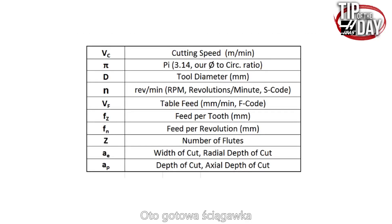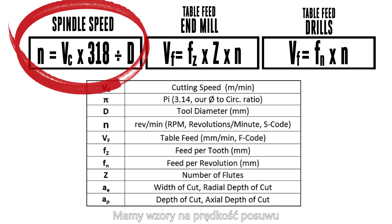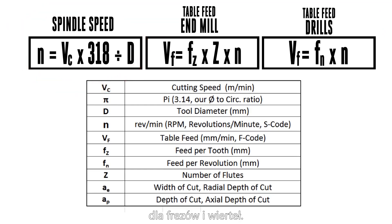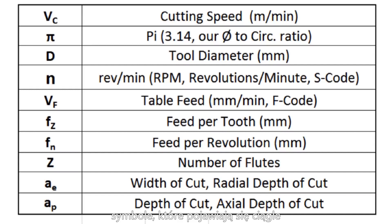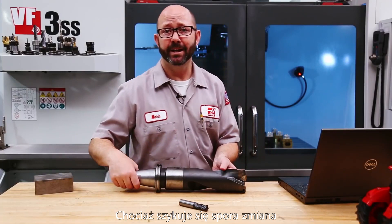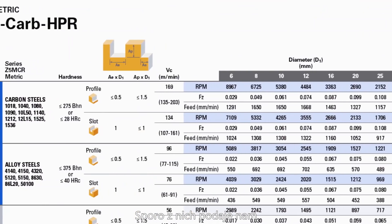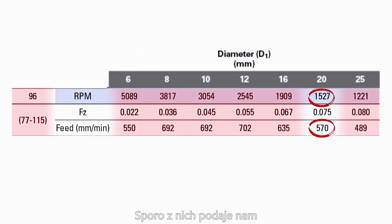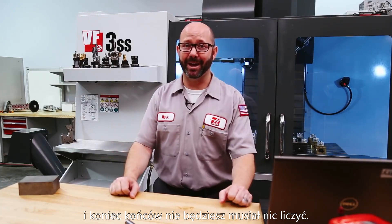Here's the completed legend and the formulas we typically use for calculating speeds and feeds: our cutting speed and spindle speed formulas, feed rate formulas for both end mills and drills, and all the notations and symbols you'll see in your tool catalogs. There's also a big shift happening with tooling catalogs — many are just giving us feed rate and RPM values directly. No formulas needed. You may open your manual and find you don't have to do any math at all.